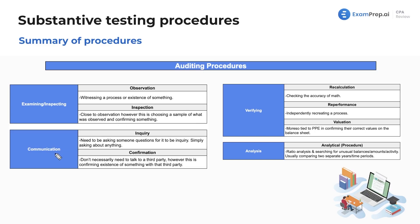For communication, we have inquiry and confirmation. Inquiry is generally asking someone something — you need to be asking someone questions for it to be an inquiry. This could be inquiring about internal controls, a specific transaction, legal counsel, management, random employees, internal audit, or the board of directors.